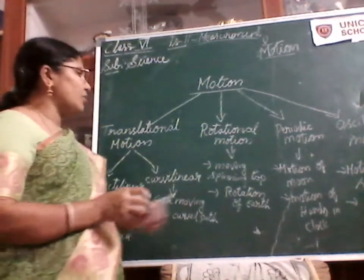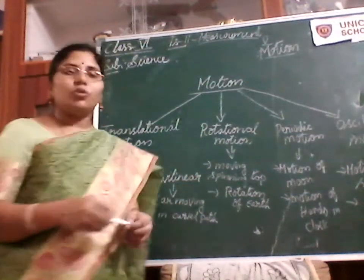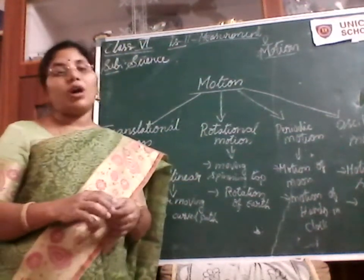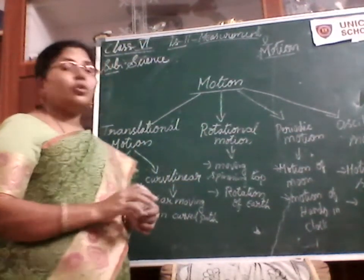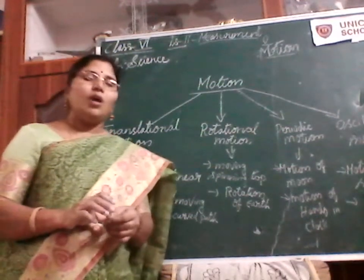The examples of periodic motion are: the motion of the moon around the earth, and the motion of the hands of a clock.